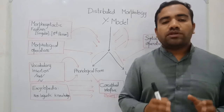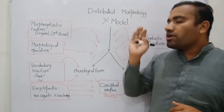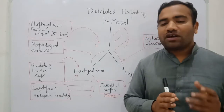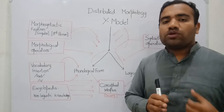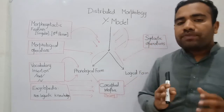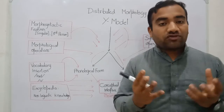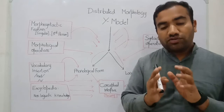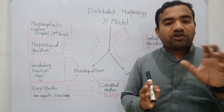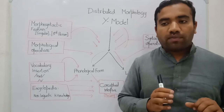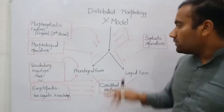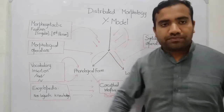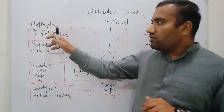Distributed morphology claims that syntax is all the way down, and they presented their model called the wire model. You should know what the wire model is if you are studying morphology. Let's take it step by step — all these things about the wire model. This is the wire shape and this is the wire model.